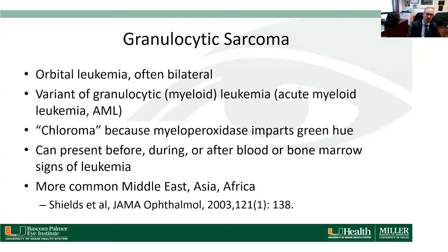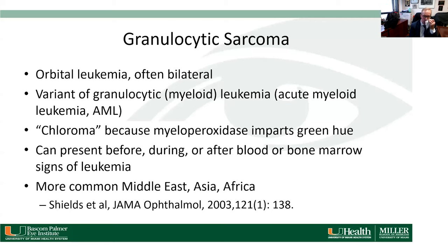Granulocytic sarcoma is another tumor that can have slowly progressive, painless, and sometimes bilateral proptosis — though more commonly unilateral. It's a variant of acute myeloid leukemia and can also be known as chloroma because the enzyme myeloperoxidase imparts a green hue to the tumor cells. This tumor is associated with acute myeloid leukemia and can present before the onset of leukemia, during treatment, or even after diagnosis. It is more common in the Middle East and Asian Africa.